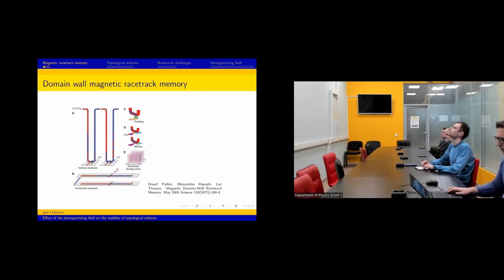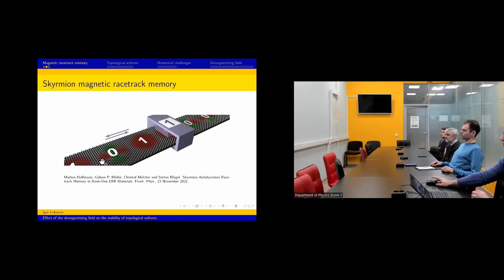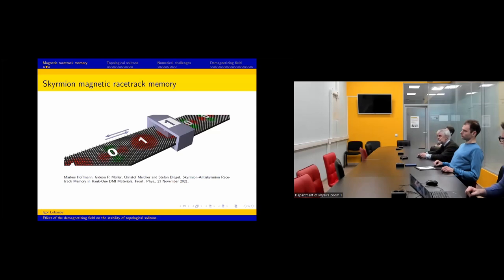The next improvement in racetrack memory was the creation of topologically protected solitons, which can be used instead of domain walls. Domain walls interact quite strongly with impurities, meaning you have to apply a large force to move them, which can be energy consuming. So it's better to create topological solitons. For example, we can create a skyrmion, which encodes one, and an anti-skyrmion, which encodes zero. These topological solitons can be moved by applying current, giving essentially the same shift register. Simulation shows that energy consumption will be one or two orders of magnitude lower.